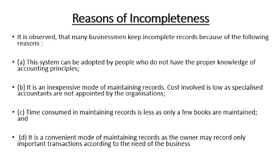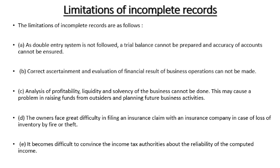Now, moving towards the limitations — the drawbacks of incomplete records. Number one, the double entry system is not used. Trial balance cannot be prepared, so accuracy of accounts cannot be checked. When the rules of debit and credit are not clear, it means double entry system is not used. Items cannot be divided into nominal, real, and personal accounts. That's why trading accounts, profit and loss accounts, and the balance sheet cannot be prepared.